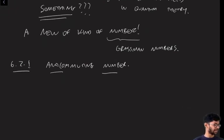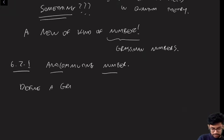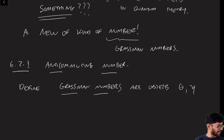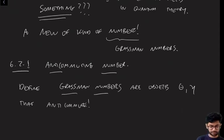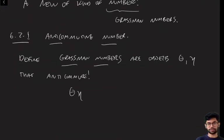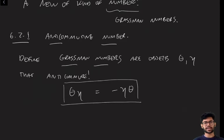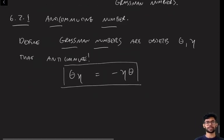Let's start defining things. I'm going to define Grassmann numbers as objects — we call them θ and η — that anti-commute. Normal numbers commute when you switch their order, but Grassmann numbers are defined so that θ times η equals minus η times θ. That is their defining property. Starting from this axiom, we're going to develop the full mathematics of Grassmann numbers.